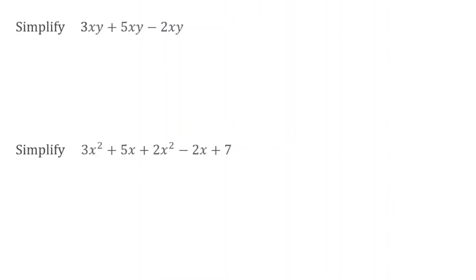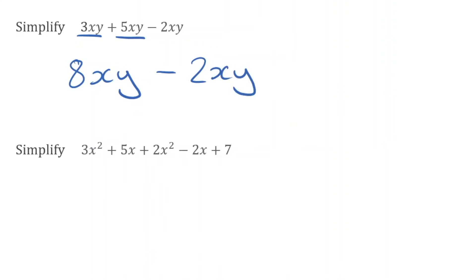For our next question, we have simplify 3xy plus 5xy minus 2xy. We have 3 lots of the term xy, then we're going to add 5 lots of xy — so that gives us 8 lots of xy — but then we've got to subtract 2 lots of xy. So 8xy take away 2xy leaves us with 6 lots of xy. That's our final answer.